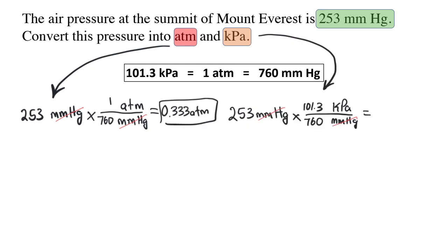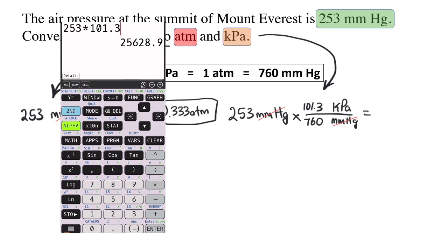In the other conversion, 253 times 101.3 then divide that by 760 to get 33.7 kilopascals.